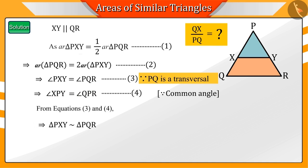So, according to the AA criteria of similarity of triangles, we can say that triangle PXY and triangle PQR are similar triangles.